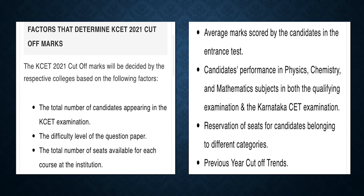The difficulty level of the question paper will also impact the cutoff — the more difficult the paper, the lower the cutoff will be. The total number of seats available for each course at each institution is also very influential: fewer seats means a higher cutoff. Average marks scored by candidates in the entrance test will affect the overall cutoff, along with candidates' performance in Physics, Chemistry, and Mathematics in both the qualifying examination and the KCET examination.